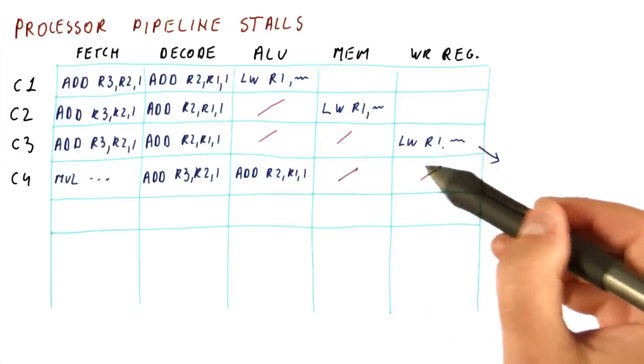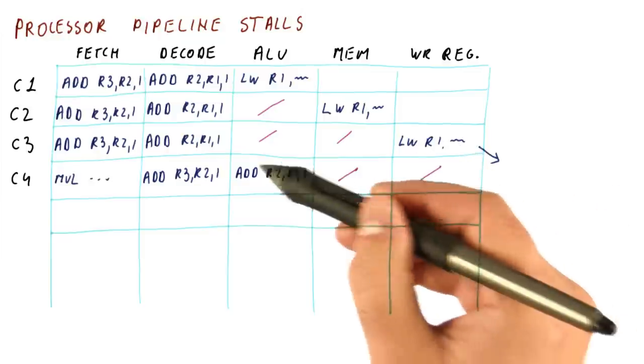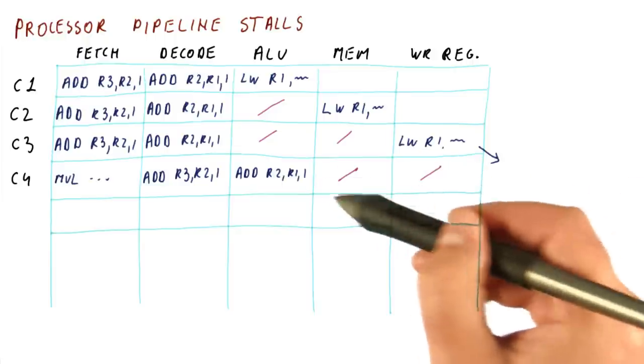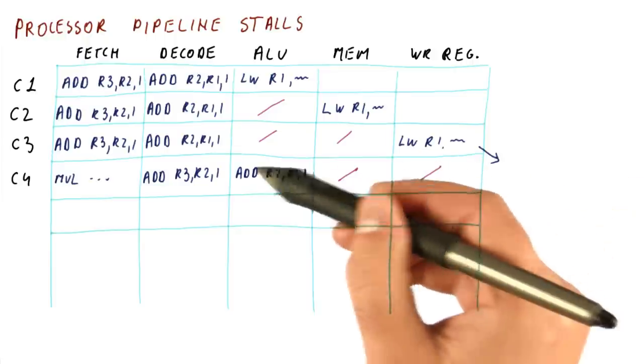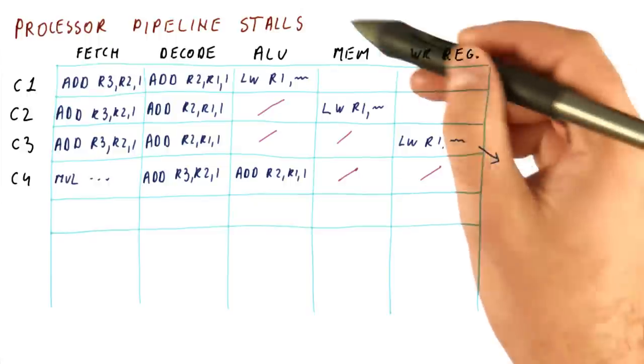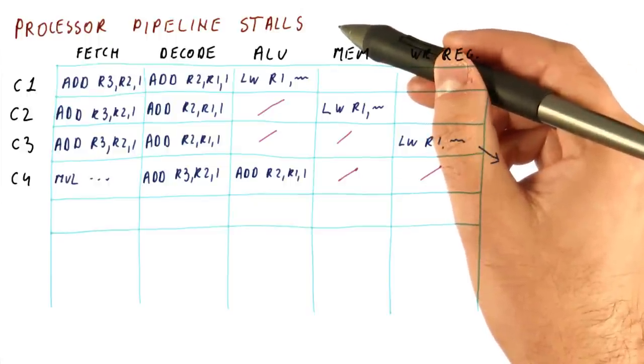So really, instead of just having one cycle for the load, one cycle for the add and so on to finish, we now have one cycle for the load, two cycles worth of not finishing anything, and then the add and so on. And that causes our pipeline to have a CPI of more than one.